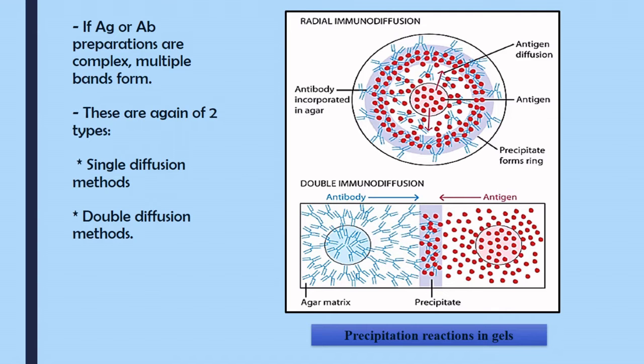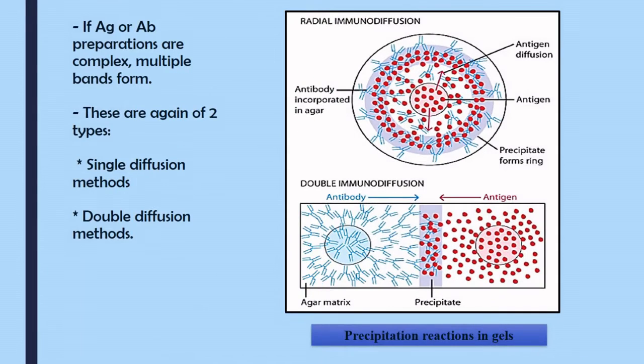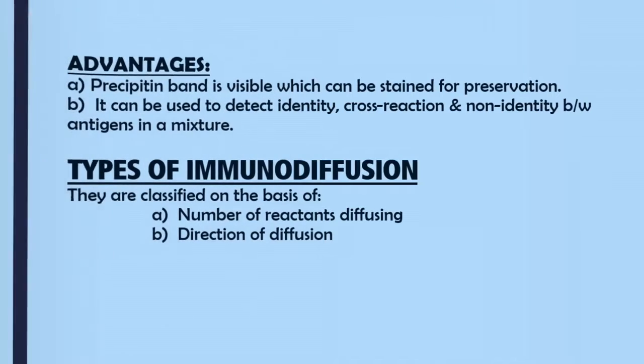Another aspect to consider is the direction of diffusion. If the components are flowing in one particular direction, it is called linear diffusion — single immunodiffusion in a linear direction. When the component diffuses across the gel in all possible directions, we call it radial immunodiffusion, just as the antigen in the previous example diffused in all directions.